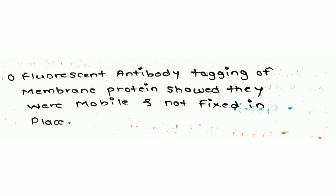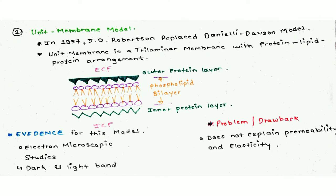The unit membrane model was proposed in 1957 by J.D. Robertson, replacing the Danielli-Davson model. According to him, the membrane has a trilaminar characteristic: two darker outer bands of protein and one inner lighter core of bilayer lipid. His study was based on potassium permanganate-stained electron microscopic images of myelin and various tissues and cells. However, the drawbacks were that it was similar to the Danielli-Davson model and did not explain the permeability and elasticity of the cell membrane.